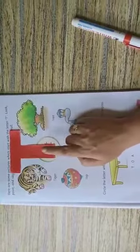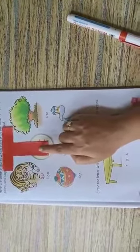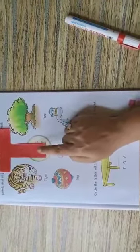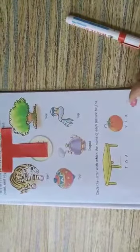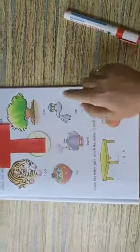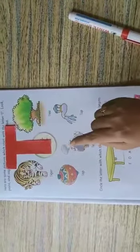This is capital letter T. T. T says T. So before starting, first you open page number 19 of your English book.